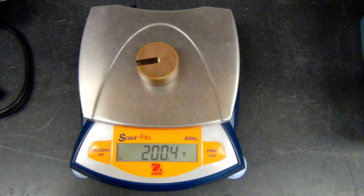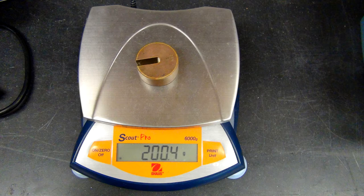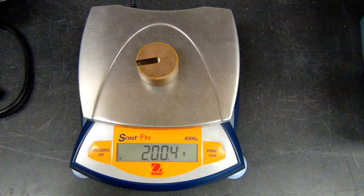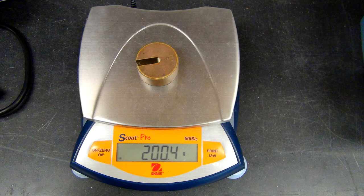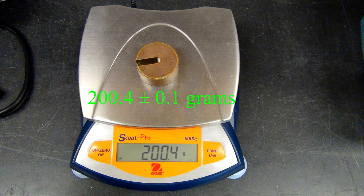In every measurement, there is always a range in the last measured digit. The hardware and software in this digital scale are rounding the last displayed digit, which occurs this time in the tenths place. We state that this mass is 200.4 plus or minus 0.1 grams.